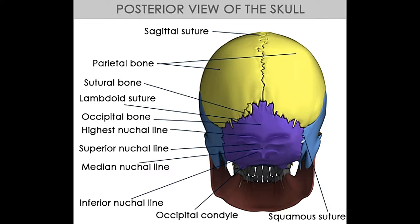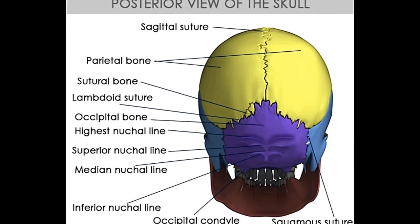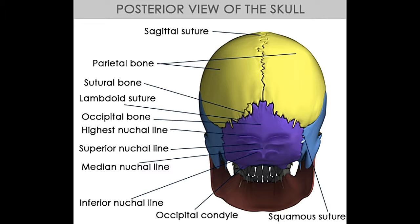Four nuchal lines are present on the external surface of the occipital bone. The highest nuchal line extends on either side from the external occipital protuberance to the mastoid process of the temporal bone, and is a site of attachment for the galea aponeurotica. The superior nuchal line lies below it and serves as a site of attachment for the trapezius, sternocleidomastoid, and splenius capitis muscles. The medial nuchal line, also called external occipital crest, runs from the external occipital protuberance down to the foramen magnum, serving as a site of attachment for the nuchal ligament. The inferior nuchal line extends laterally from the middle of the medial nuchal line and serves as a site of attachment for the semispinalis capitis muscle.